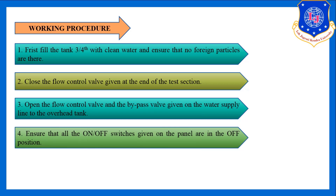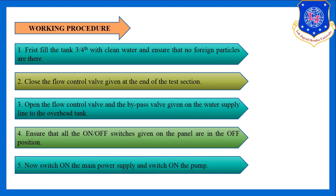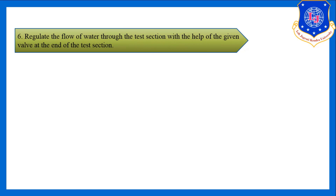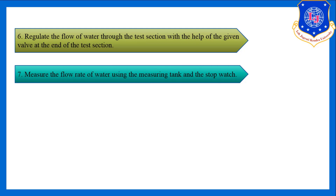Ensure all on/off switches on the panel are in the off condition, then switch on the main power supply and switch on the pump. Water from the sump tank will transfer to the overhead tank and then to the measuring tank. Regulate the flow to the test section using the valve at its end to take different readings.